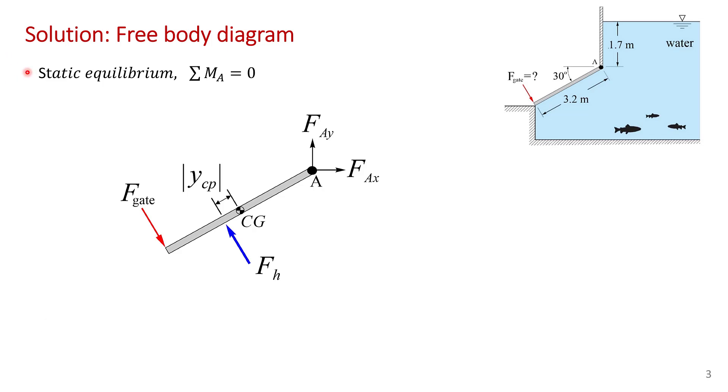As with all these problems you should start with a free body diagram. And of course what we're looking at is static equilibrium of the gate where the sum of the moments are set to zero. And of course we take the sum of the moments about the hinge about point A because in that way we can avoid calculating the hinge forces.